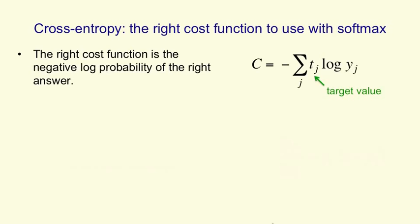We put zeros in front of all the wrong answers. And we put 1 in front of the right answer, and that gets us the negative log probability of the correct answer, as you can see in the equation. That's called the cross entropy cost function.